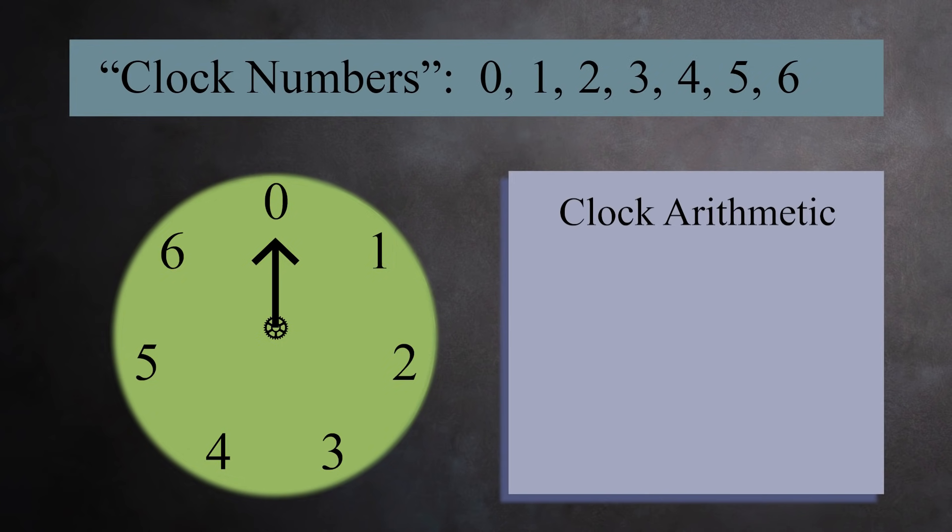You can add and subtract any two of these numbers. For example, what is three plus five? If the hour hand starts at three and you add five more hours, you end up at one. So on this clock, three plus five equals one. Similarly, four plus three equals zero, because if you start at four and add three more hours, you end up at the top, which is zero.